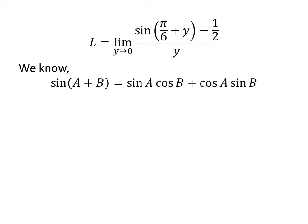We know the famous trigonometry identity: sine of a plus b is equal to sine of a times cosine of b, plus cosine of a times sine of b.